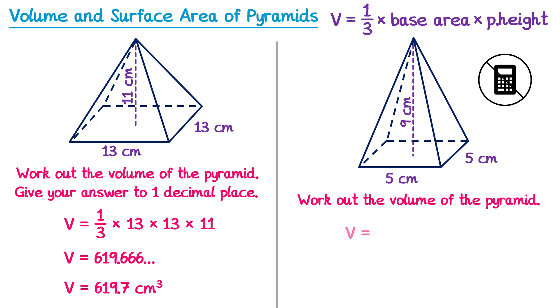For the second one we would do volume equals one-third multiplied by the base area, so 5 times 5 this time, then multiplied by the perpendicular height which is 9. Now this one is non-calculator, which you might find a bit strange at first, especially if you try to do one-third multiplied by 5 — that's not going to give us an integer answer because 5 isn't in the 3 times table. But since we just have lots of multiplications here, we can change the order, and actually do one-third times 9 first.